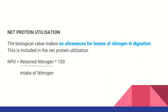Net Protein Utilization. What we need from this formula is that loss of nitrogen also involves digestion. If we break down the protein, that is our end product. If you calculate the nitrogen, you can calculate the nitrogen intake into 100.